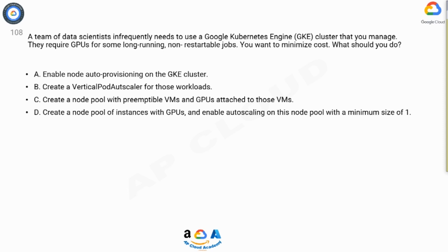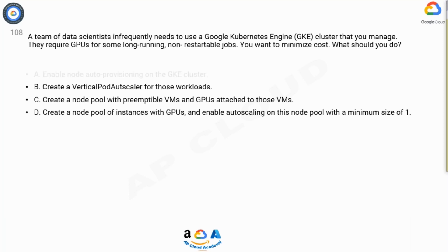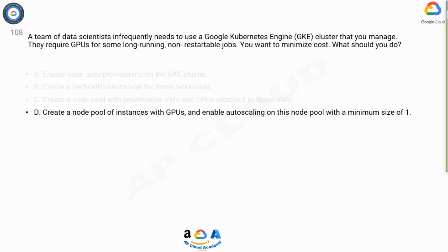C: Create a node pool with preemptible VMs and GPUs attached to those VMs. D: Create a node pool of instances with GPUs and enable autoscaling on this node pool with a minimum size of one. The correct answer is D.